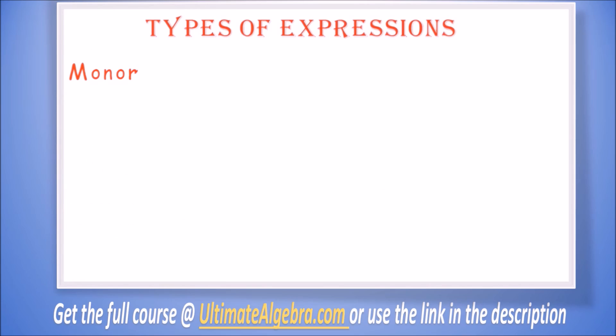Types of expressions: A monomial is an algebraic expression of one term. So when we have a single term like 2a squared, this is just one term. It has no plus or minus sign or anything else.